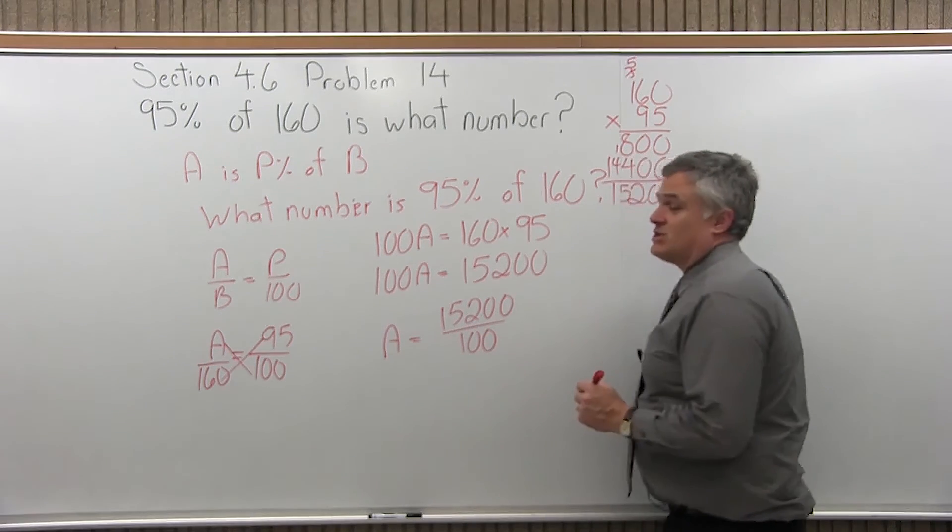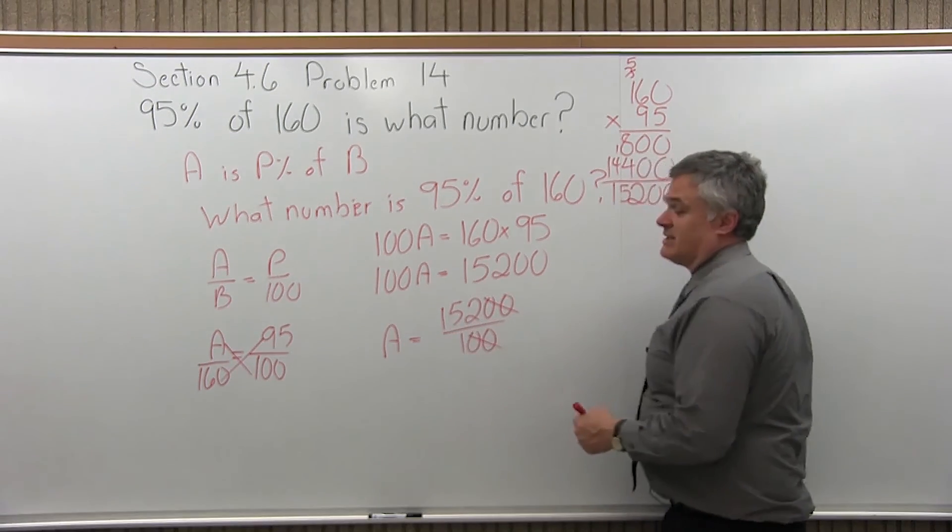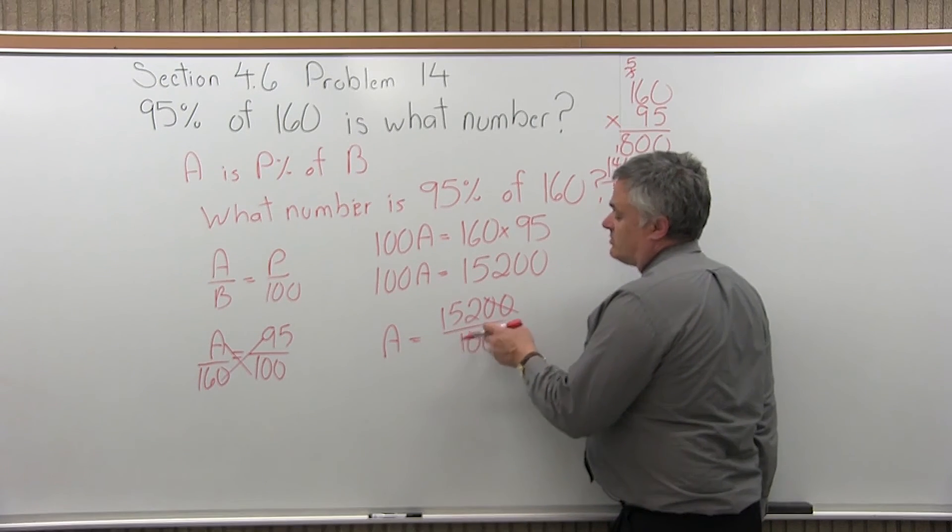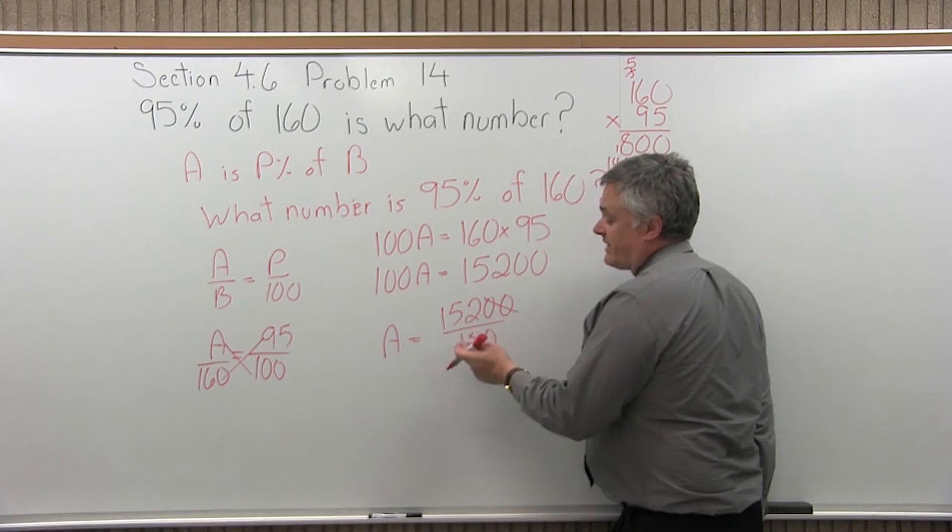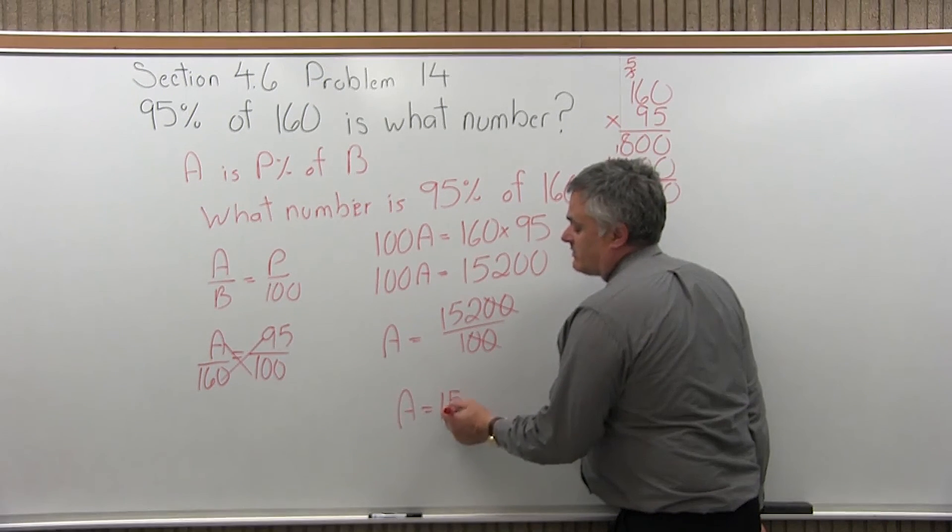So A is 15,200 over 100. Now the thing is, the division is very easy. The two zeros at the end really just cancel off. And technically what I'm doing, I'm reducing by 100. The two zeros, 100 divides into 15,200 evenly, and it divides into 100 evenly. So A is 152.